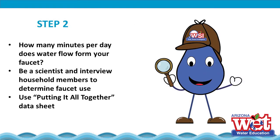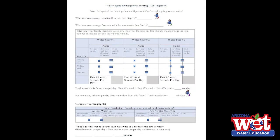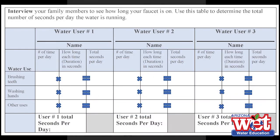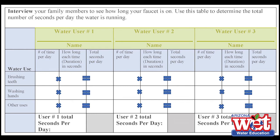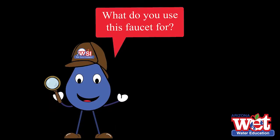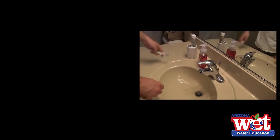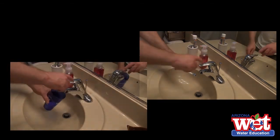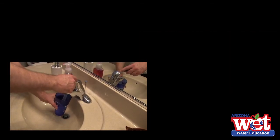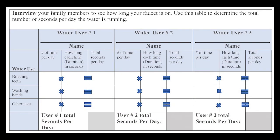Now we're going to find out how many minutes per day the water flows from your faucet. To do this, you're going to interview people in your house — scientists often obtain information through interviewing people. Use the putting it all together data sheet included with your kit. On the first table, enter the names of all the users of this faucet, and don't forget to include yourself. Now ask them what they use this faucet for, and how many times they do each activity, and write it down on the table sheet.